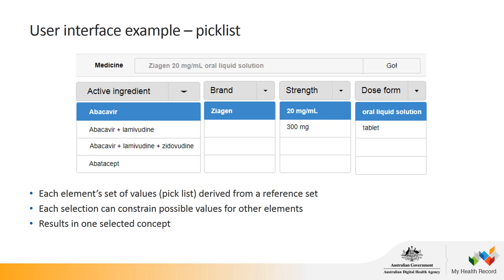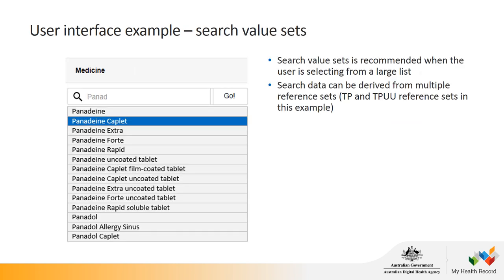The next couple of slides show examples of how the AMT can be used in a clinical system. Here we have a pick list where each element is derived from a reference set — each selection can constrain possible values for other elements and results in a selected concept. For example, an active ingredient pick list may include the medicinal product reference set and the brand would be the trade product reference set. Pick lists are only suitable when a short list can be presented to the user. Another way to implement the terminology is with a search function, recommended when the user is selecting from a large list of items, and it is possible to combine several reference sets.